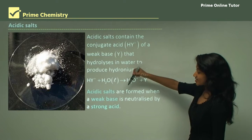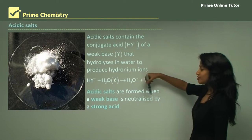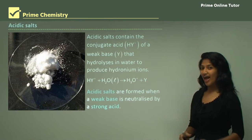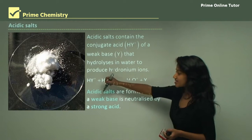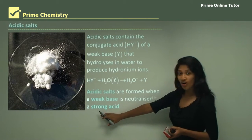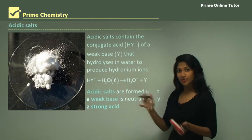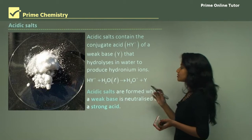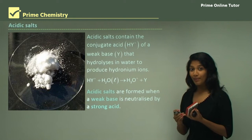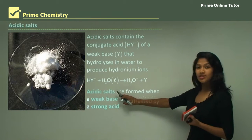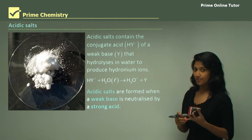An acidic salt is formed when a weak base is neutralized by a strong acid. So acidic salts have a strong acid and a weak base reacting. To summarize: basic salts come from a strong base and weak acid; acidic salts come from a strong acid and weak base.